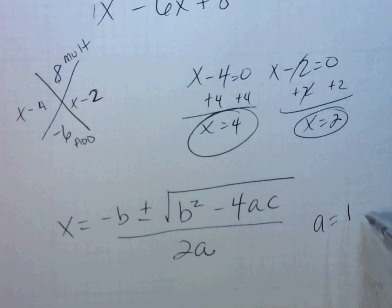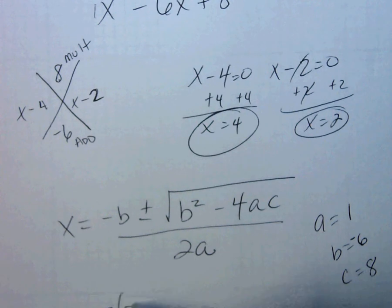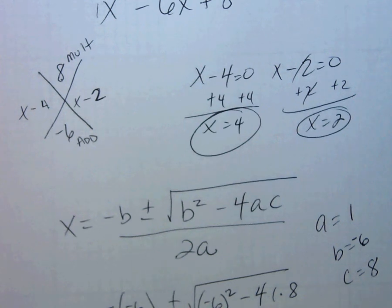My a was 1, my b is negative 6, and c is 8. So this would be negative negative 6. Negative 6 in parentheses squared, minus 4 times 1 times c, which is 8, all over 2 times 1.